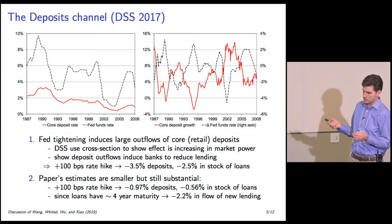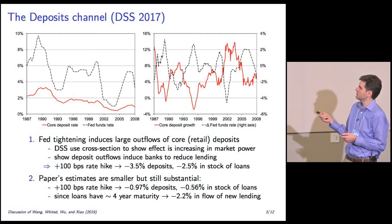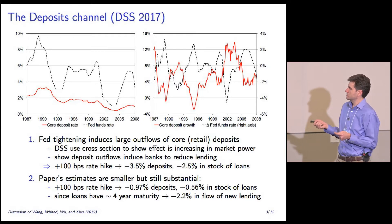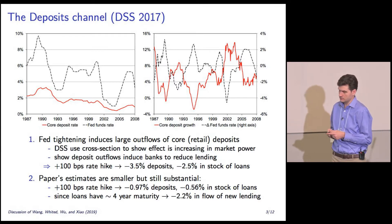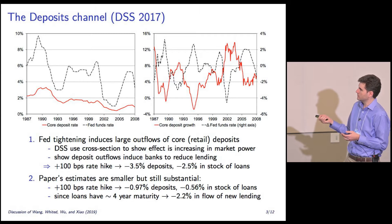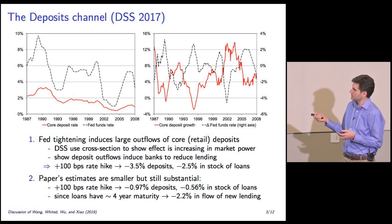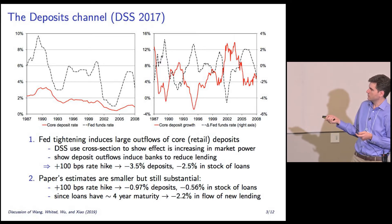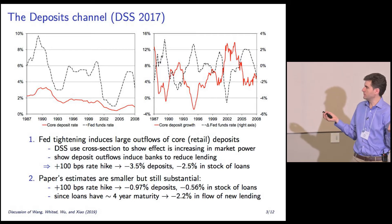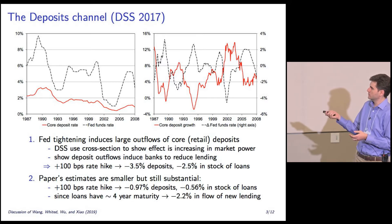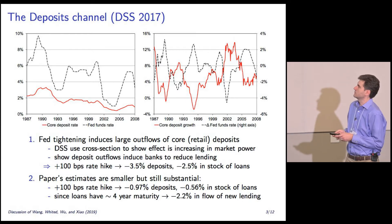In our paper, we went to the cross-section to quantify the effects. We found that a 100 basis point rate hike is associated with about a 3.5% contraction in deposits and a 2.5% contraction in the stock of loans on bank balance sheets. This paper gets numbers that are smaller — about a 1% contraction in deposits and a 0.56% contraction in the stock of loans. That's still a pretty big number because loans have something like a 4- or 5-year maturity, so to contract the stock of loans by 0.5%, the flow of new lending has to contract by over 2%.